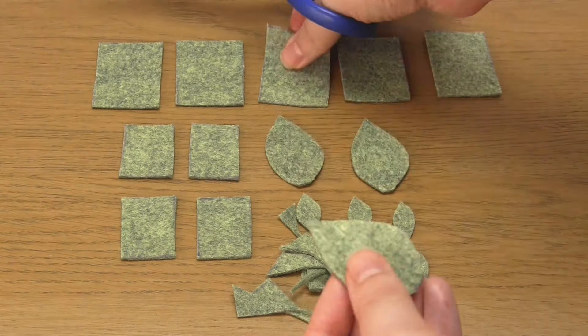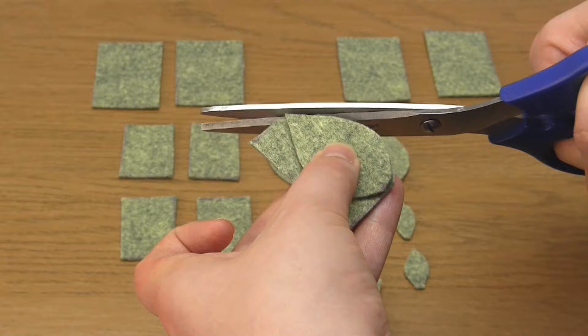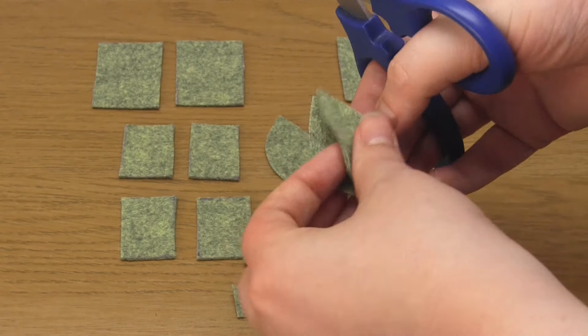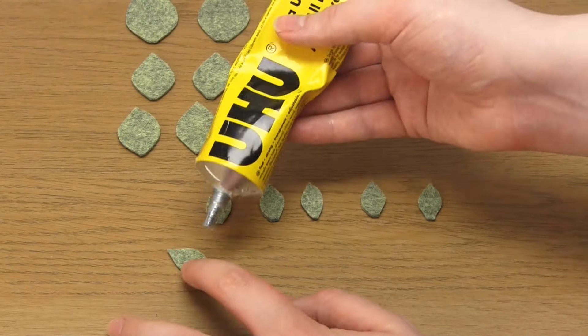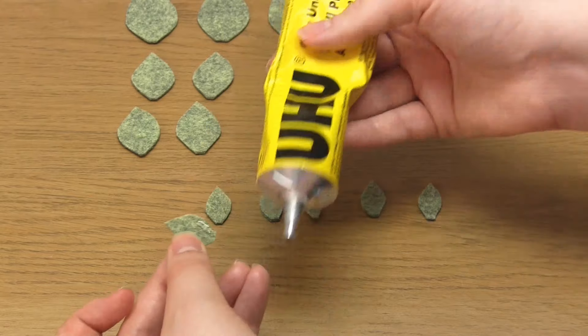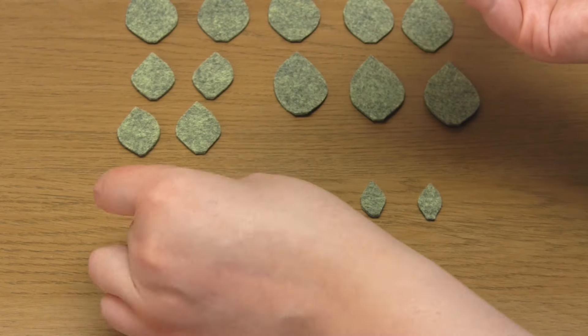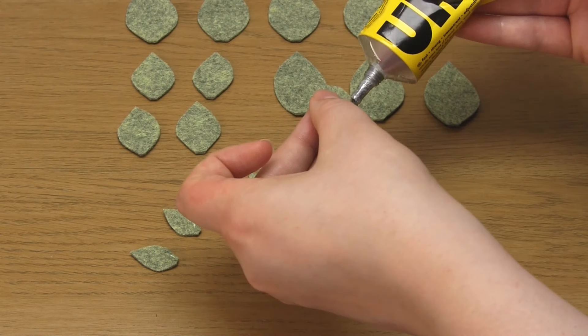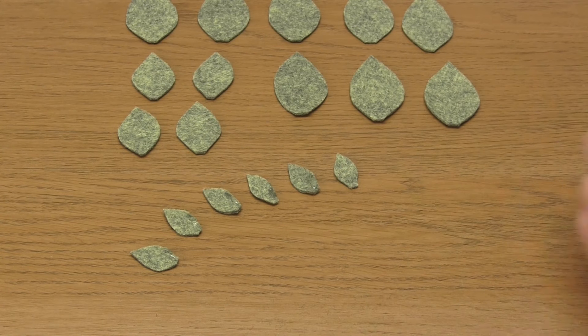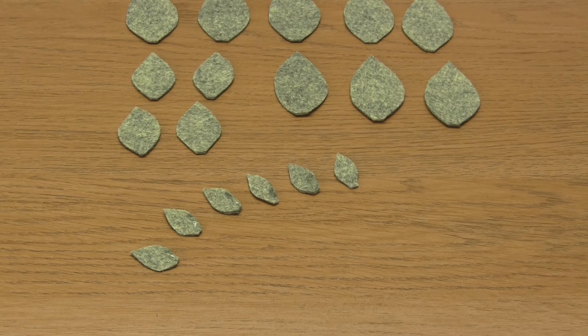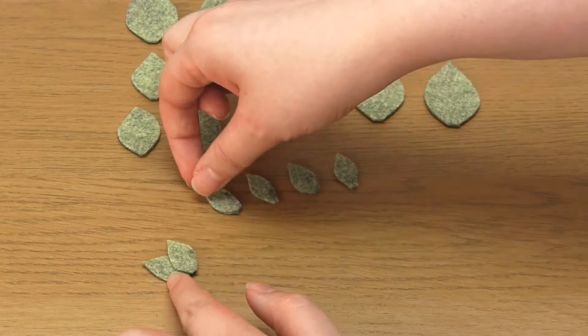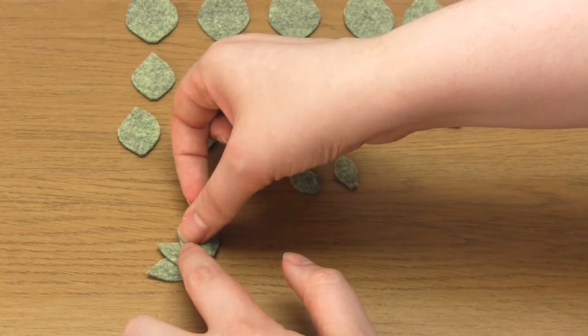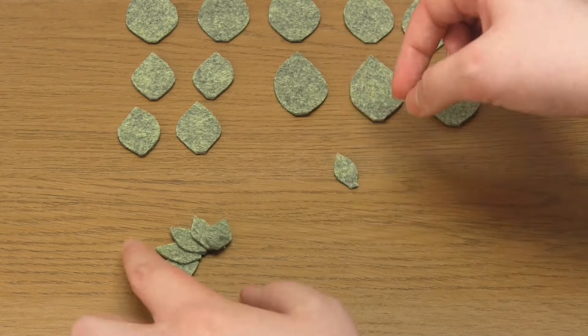Once you've cut out one leaf of each size, you can use these as a template for cutting out the rest. Apply a little bit of glue to the right-hand edge of all but one of the smallest felt pieces. This line of glue should go from the flat base most of the way up the side, but it should stop before the point. Attach these pieces together, like so, into an arch shape.